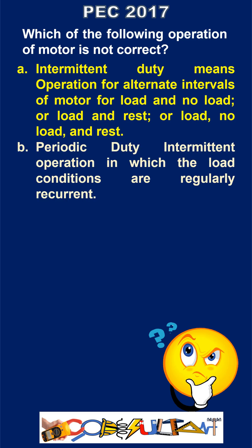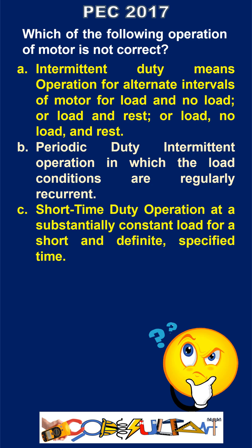B. Periodic duty: intermittent operation in which the load conditions are regularly recurrent. C. Short time duty: operation at a substantially constant load for a short and definite, specified time.